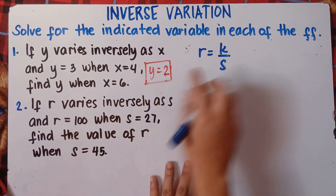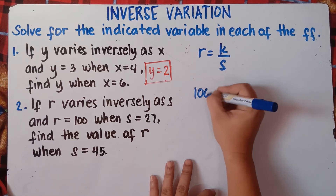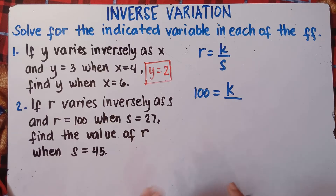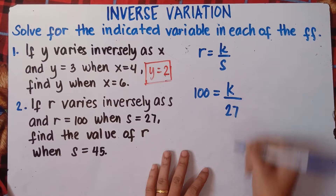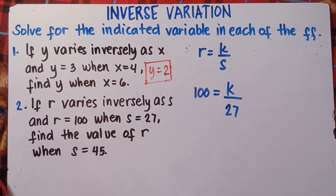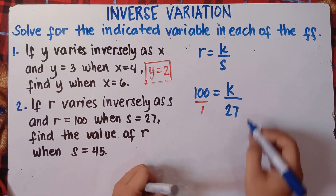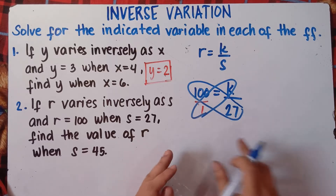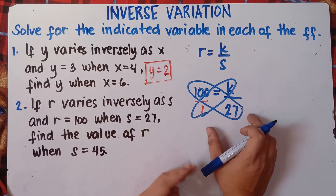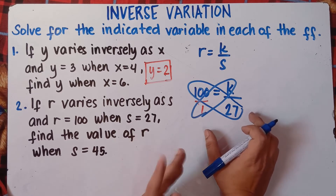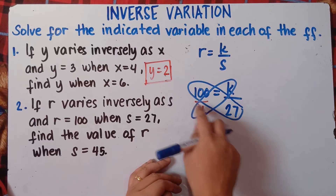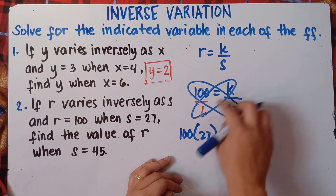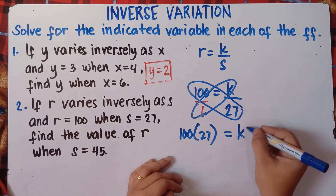From the first statement, r equals 100 and s equals 27. Substitute: 100 equals k over 27. To get k, use cross multiplication: 100 times 27 equals k times 1. There are two solutions here — cross multiplication or properties of equality — but most students use cross multiplication to avoid confusion with properties of equality.